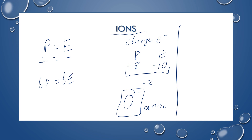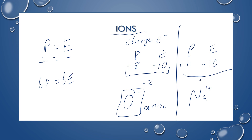Let's do sodium. Sodium has 11 protons — all atoms of sodium have 11 protons. If it was neutral, it would have 11 electrons. But neutral sodium is not very stable, so sodium will typically lose that one electron and have 10 electrons. Now we have a positive 11 from the protons and a negative 10 from the electrons, giving us a positive one charge overall, which we write with the number first and then the sign — or a lot of times we'll just say plus. Positively charged ions like this are called cations.